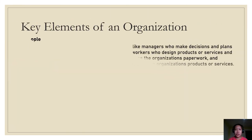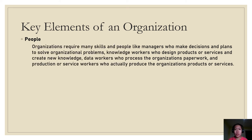Key elements of an organization: organizations are formal social units developed to attain specific goals. Organizations require many skills and people — managers such as senior, middle, and operational managers who make decisions and plans to solve organizational problems; knowledge workers like engineers, architects, and scientists who design products or services and create new knowledge; data workers like secretaries, bookkeepers, and clerks who process the organization's paperwork; and production or service workers like machinists, assemblers, or packers who produce the organization's products or services.